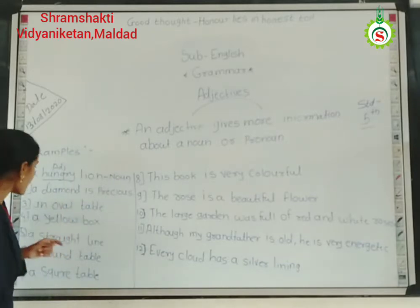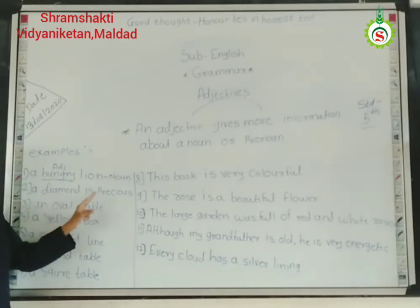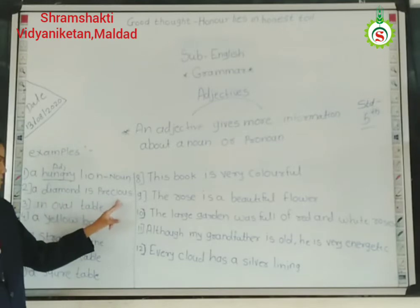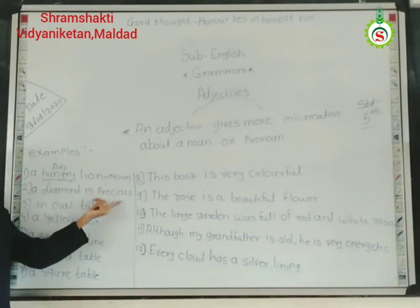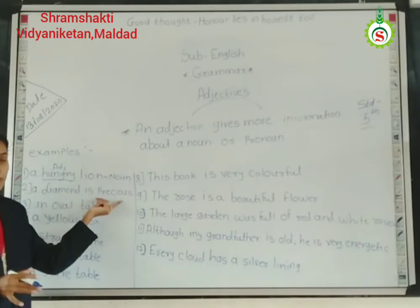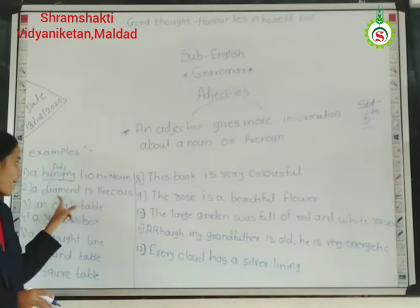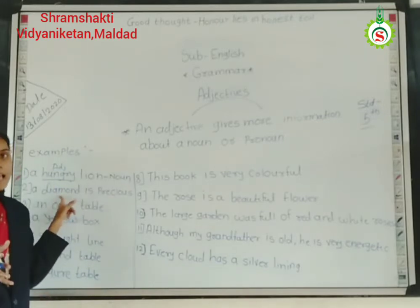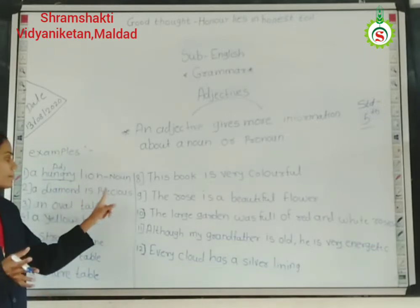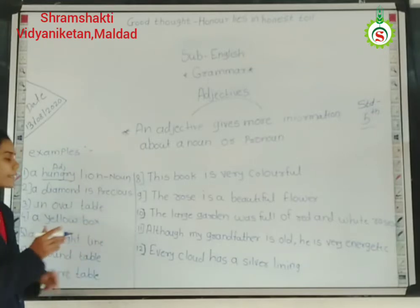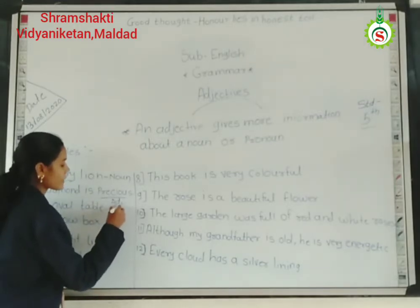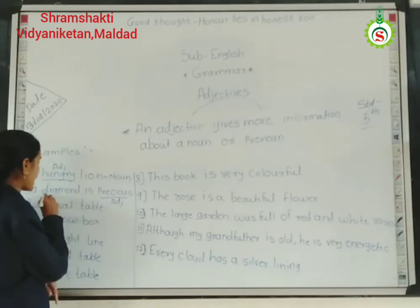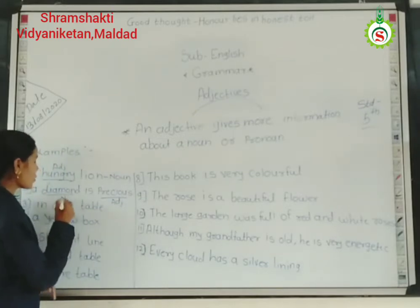This is the second example: 'A diamond is precious.' So how is the diamond? Diamond is precious. The word 'precious' gives more information about diamond. Diamond is a noun, and precious is the adjective.